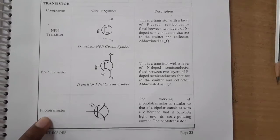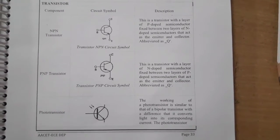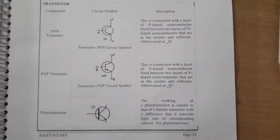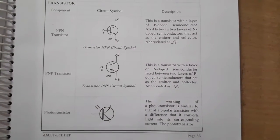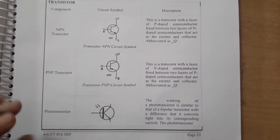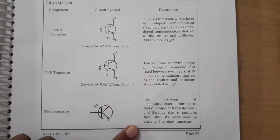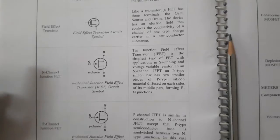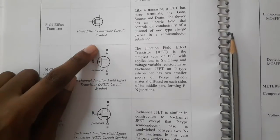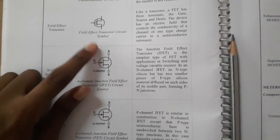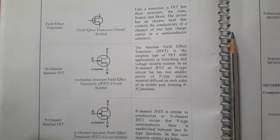Next is the photo transistor, which is basically similar to a bipolar transistor, but the difference is that it converts incident light into a corresponding current. Next are field effect transistors (FET) — this is the symbol. They have three terminals: gate, drain, and source.